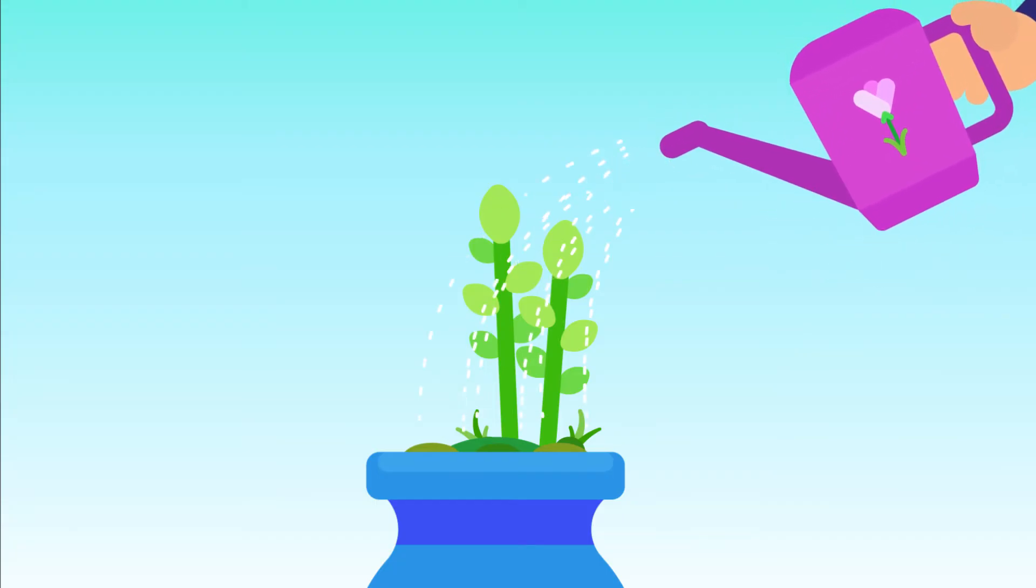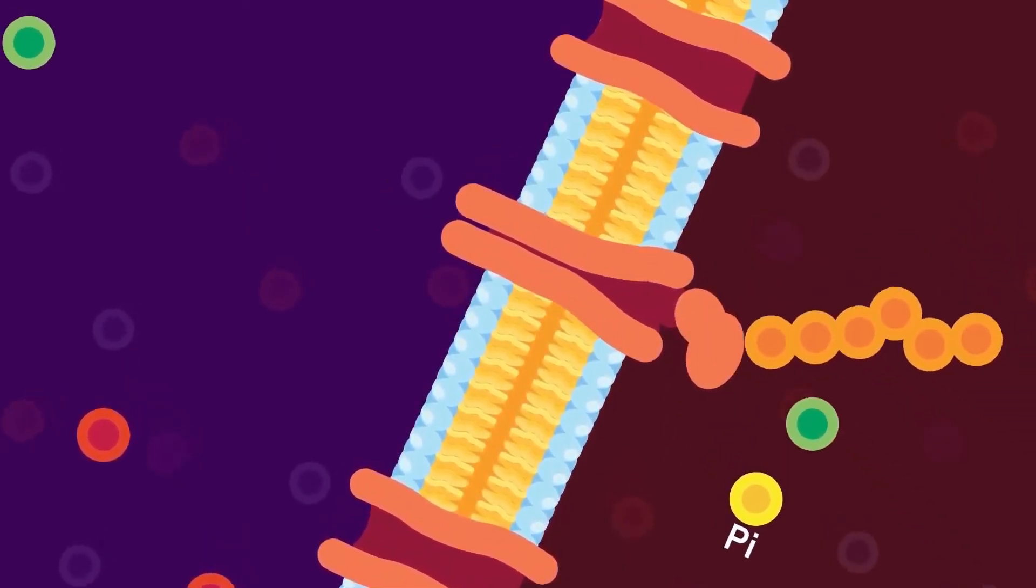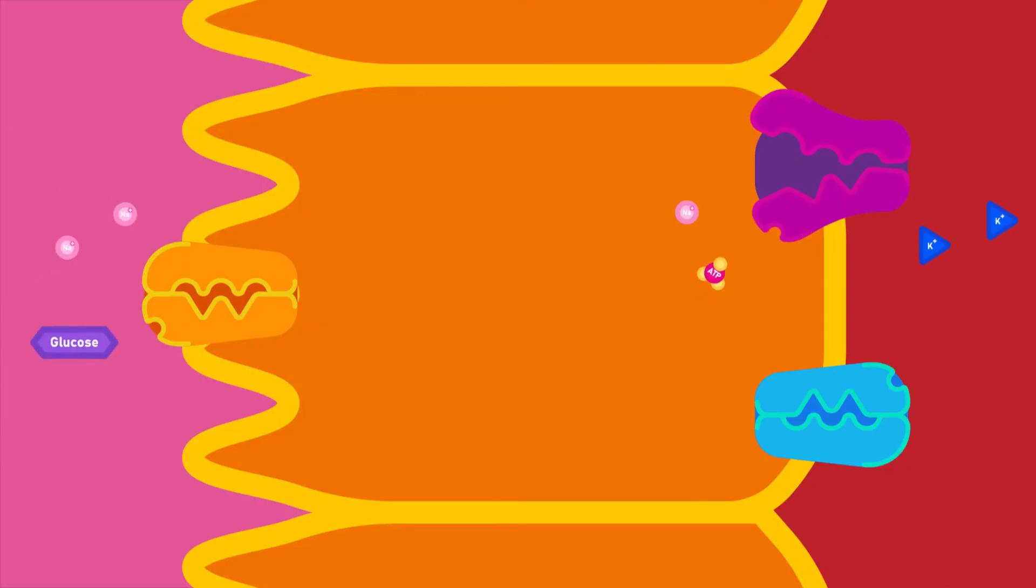organisms. The flow of some substances depends on active transport. This includes the absorption of dissolved mineral salts by root hairs. It is also used in the uptake of glucose and amino acids by cells in the human small intestine.